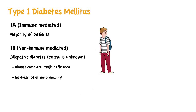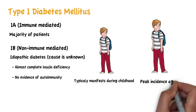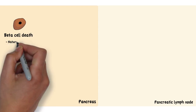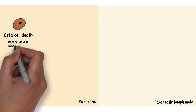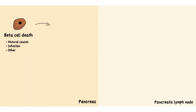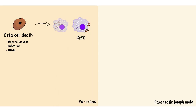Type 1 diabetes typically manifests in childhood, with a peak incidence around the time of puberty. Beta cells in the pancreas die, due to natural causes as occurs to all cells at some point during development, or due to an infection, for example. Beta cell antigens and cellular fragments that are released during cell death are taken up by macrophages or dendritic cells, which become antigen-presenting cells.